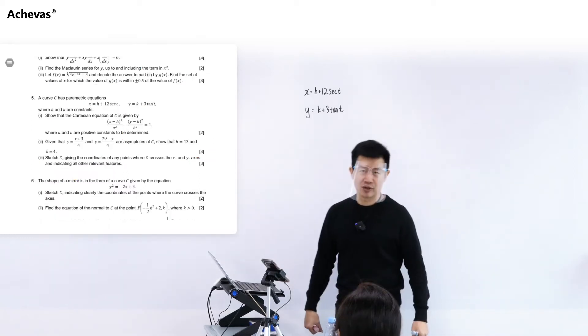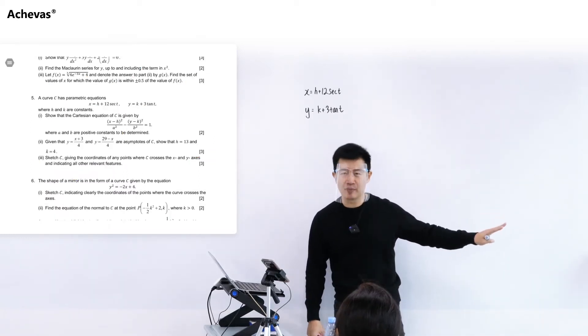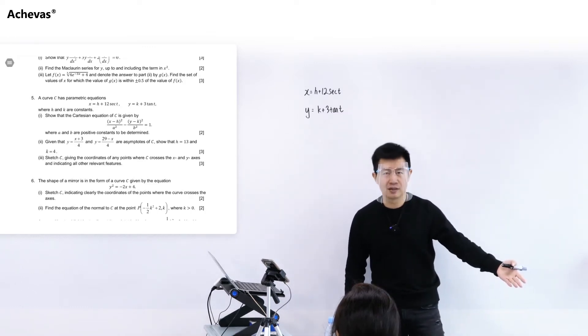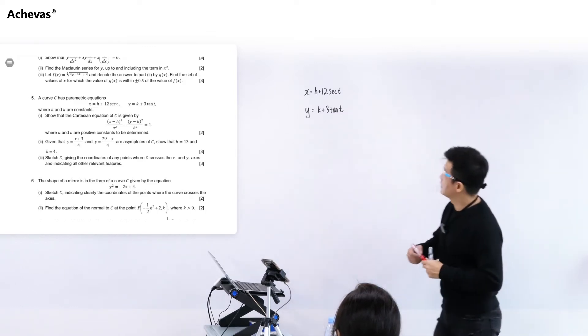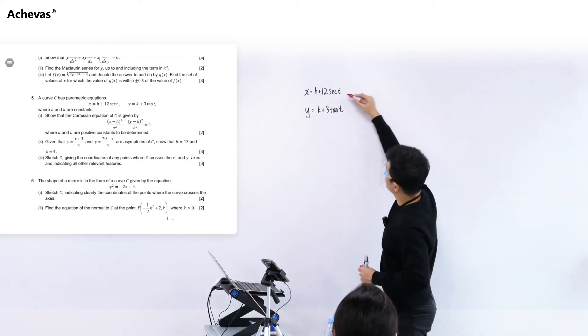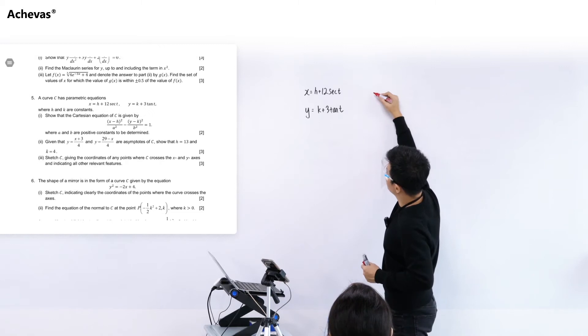There are some people who don't study parametric. They just roughly know a bit about parametric and then they try to use a lot of head knowledge but very little decision making. So they will do this. Okay, parametric to Cartesian, right? So maybe I can just try something that is like this, secant.